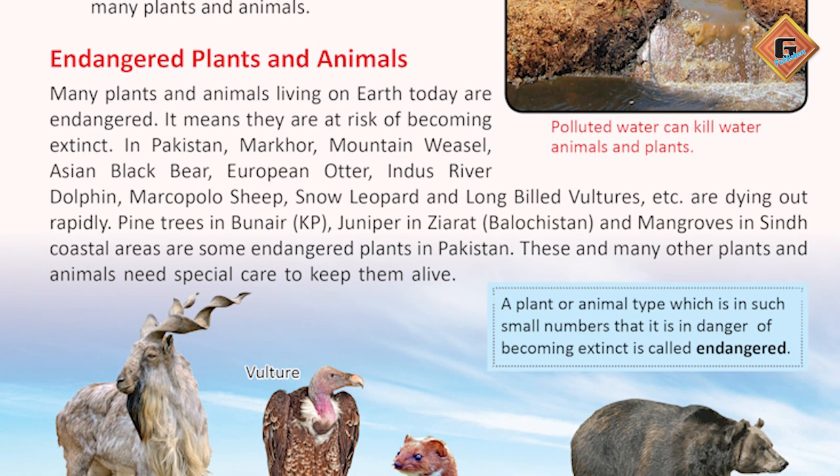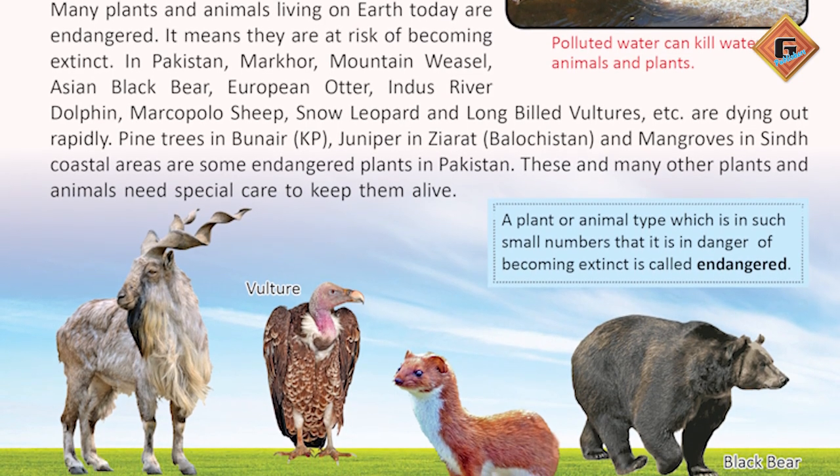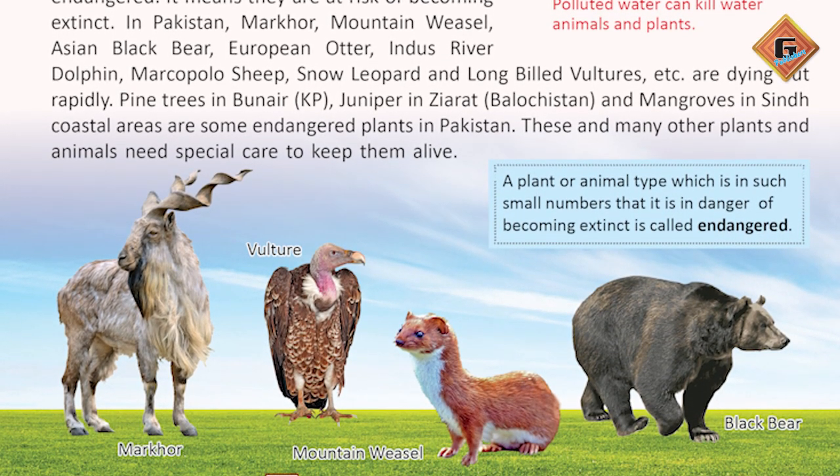Students, now we see which species are endangered. Endangered species are those that are in danger of becoming extinct — at such risk that in the coming time that species could completely disappear. In Pakistan, examples of endangered species include the Marco Polo sheep, the vulture, and pine trees, which are at an alarming risk of extinction.